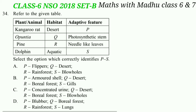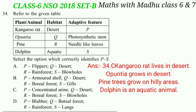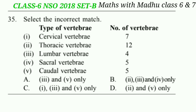Now question 34. Refer to the given table and select the option which correctly identifies P to S. Plant or animal habitat and adaptive features are given. Caral Rat lives in desert, so to conserve water it produces concentrated urine. Opuntia grows in desert and has thick fleshy stem that stores water and performs photosynthesis. Pine tree grows in hilly areas and has needle-like leaves to retain moisture. Dolphin is an aquatic animal that breathes through blowholes. So the correct answer will be option C: P - concentrated urine, Q - desert or boreal forest, S - blowholes.